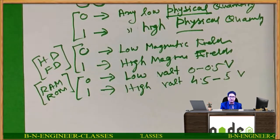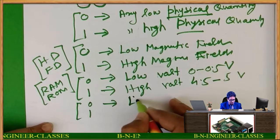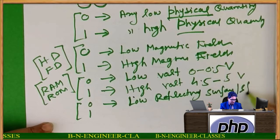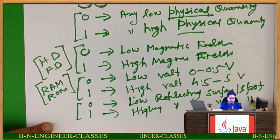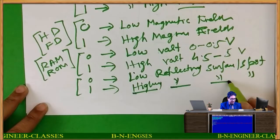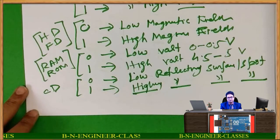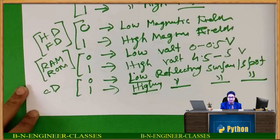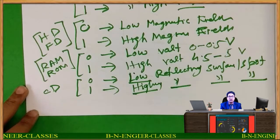In a CD, 0 and 1 are represented by low or high reflecting surface or spot. 0 is a low reflecting surface or spot and 1 is a highly reflecting surface or spot. This is particularly used in CD, compact disk, and DVD. How to identify this low or high reflecting surface? We can recognize it with the help of a laser beam, and who creates such a low or high reflecting spot? We create it also with the help of a laser beam.